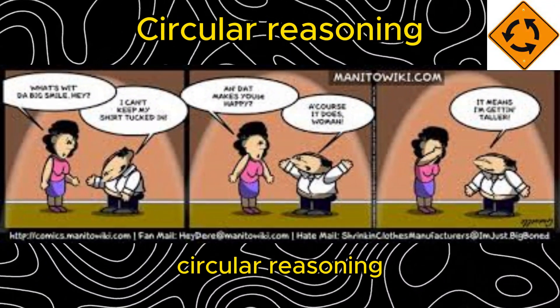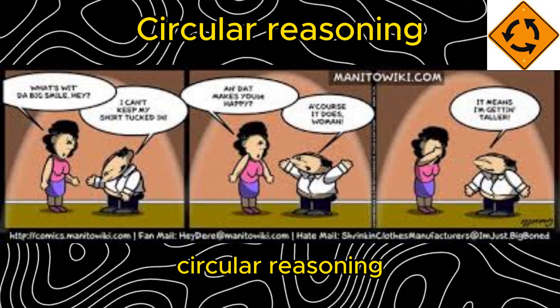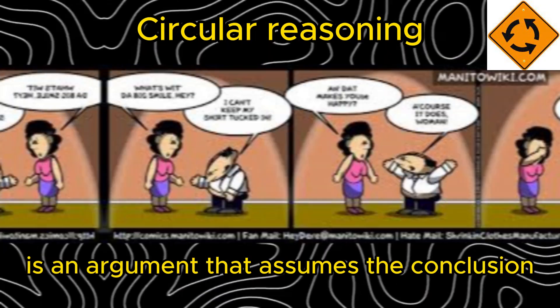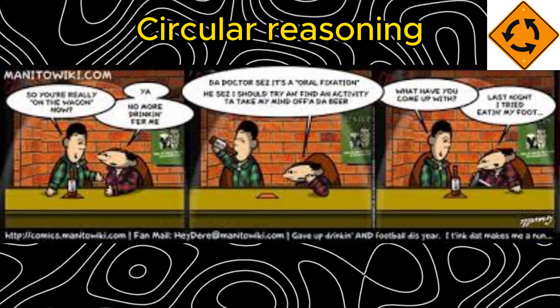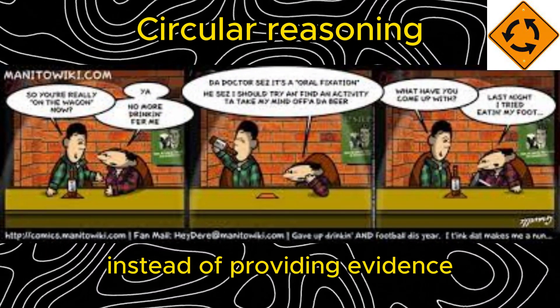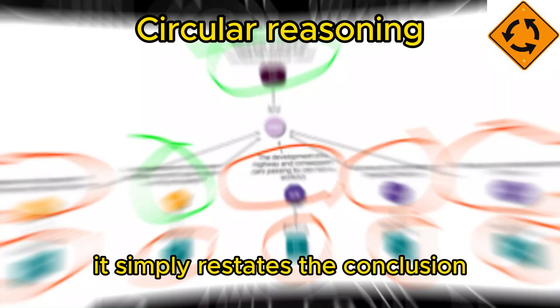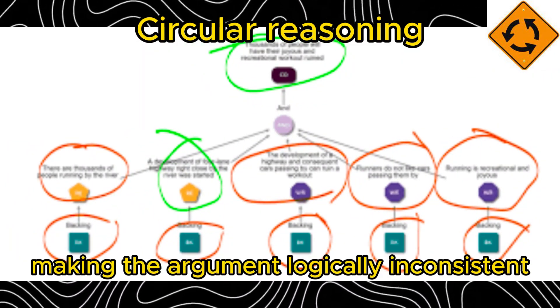Circular reasoning. Circular reasoning is an argument that assumes the conclusion it is attempting to prove. Instead of providing evidence, it simply restates the conclusion, making the argument logically inconsistent.